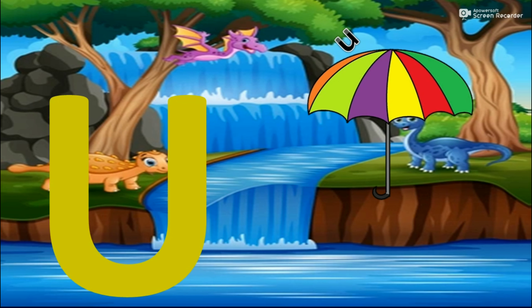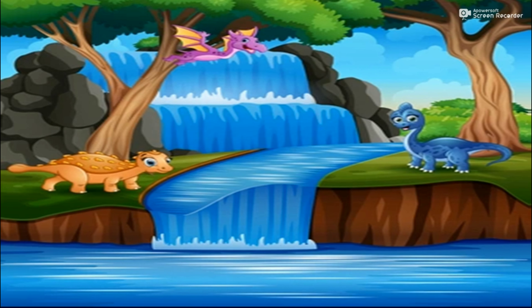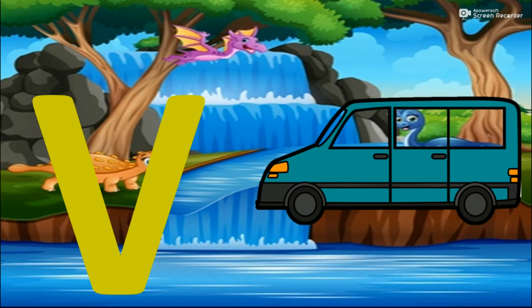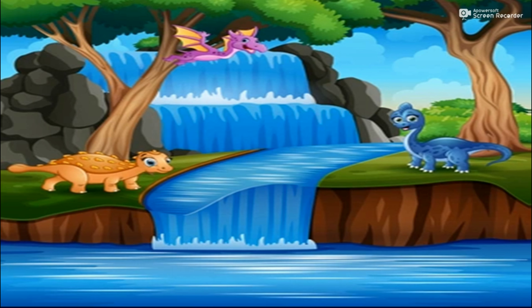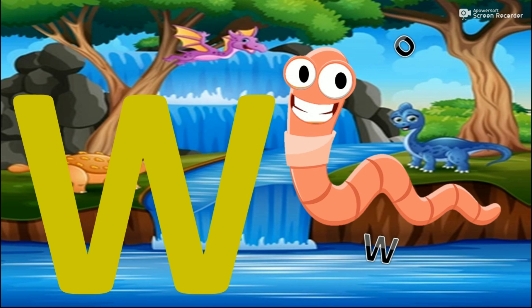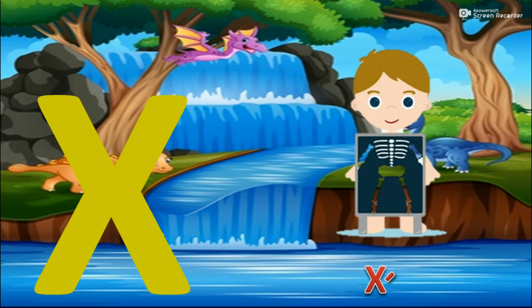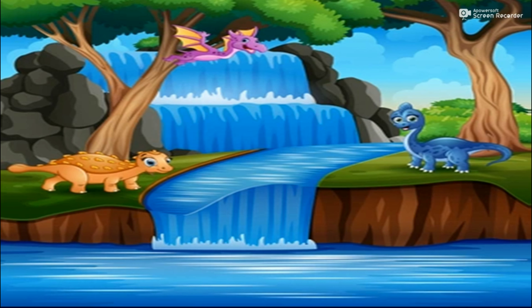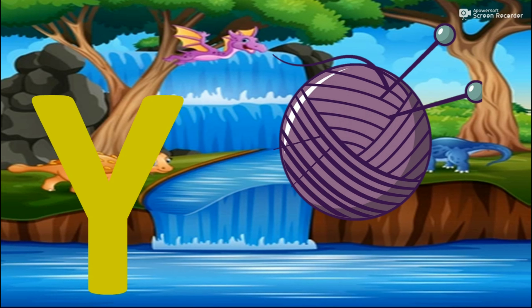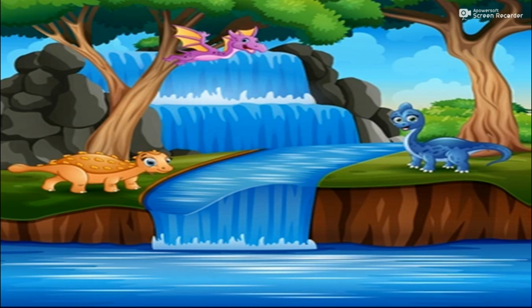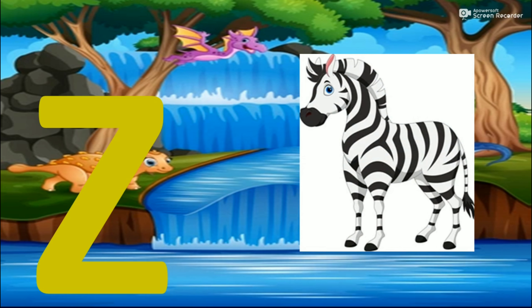U for Umbrella. V for Tree. W for Worm. X for X-Ray. Y for Yarn. Z for Zebra.